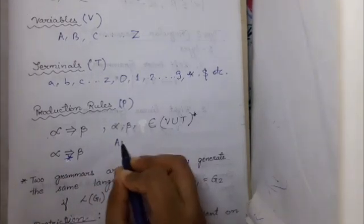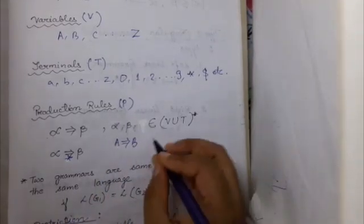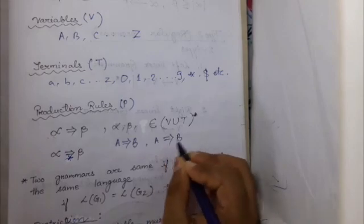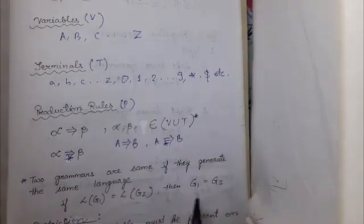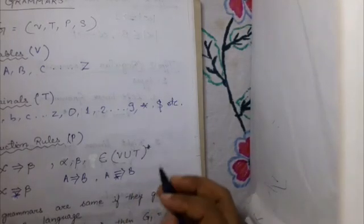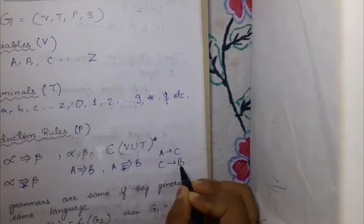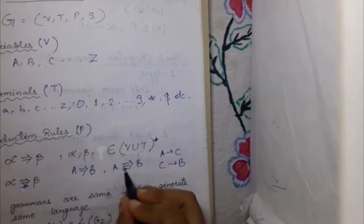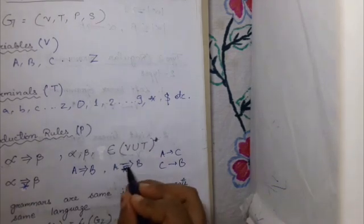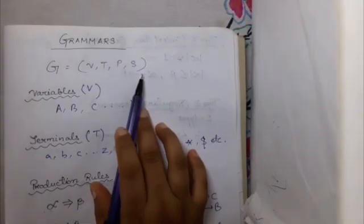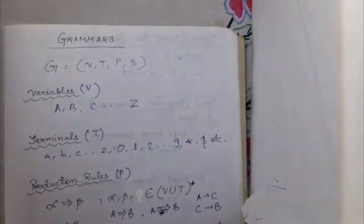For example, if A derives B with a plain arrow, that means A directly derives B. But if we put a star under the arrow, that means A will derive B in a number of steps — for instance, A derives C and C derives B, then we can say A derives B in a number of steps using the starred arrow. The starting symbol S can also be defined by any other symbol, but it will be mentioned in the question.